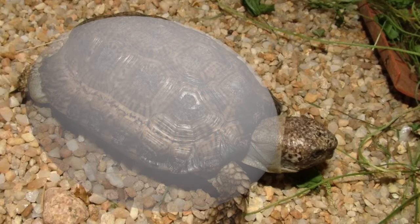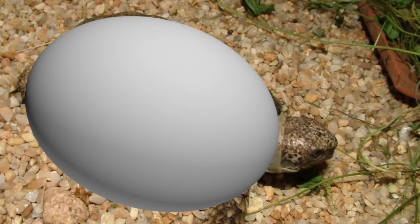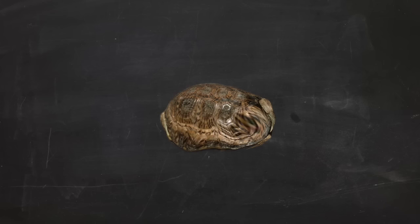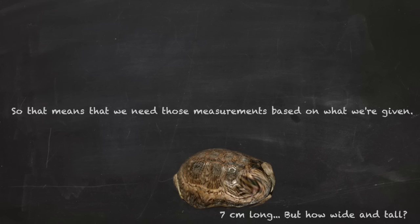If we imagine him as a full oval sphere, then he'd look a little like this. His radius is half the length across on each side. So that means that we need those measurements based on what we're given.